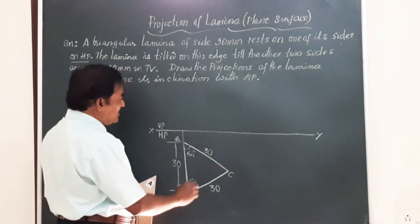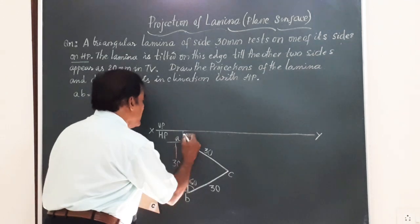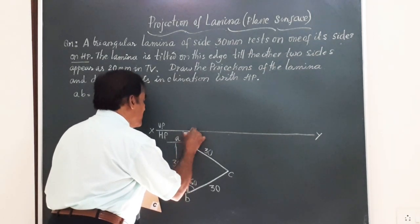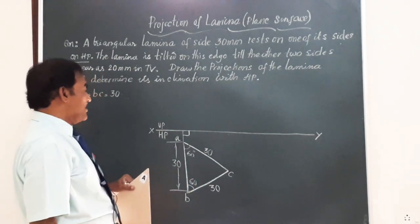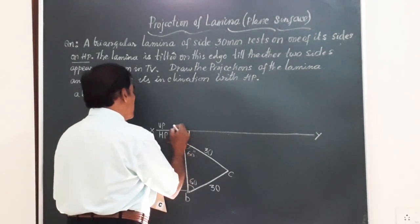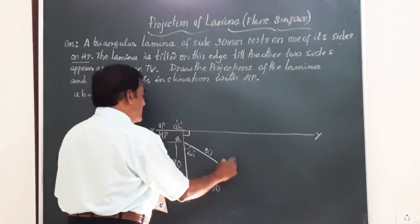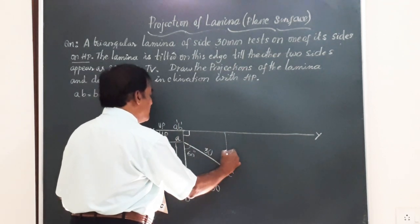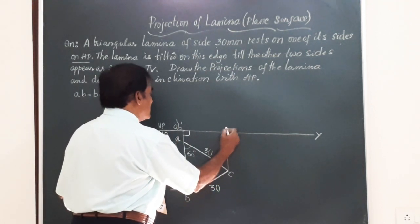Friends, you know, the lamina is placed on HP with the side AB normal to VP, means perpendicular to VP. And now, here we can get this point as A dash, B dash. And if you draw a vertical line from here, you get a point C dash.